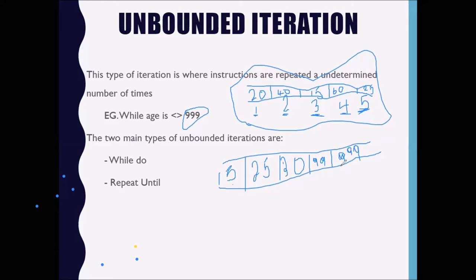In the first case the program looped twice because the third person entered 999. In the second case the program looped four times. When 999 is entered the program terminates — it stops and goes to whatever is outside of the loop and continues.